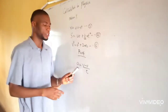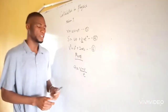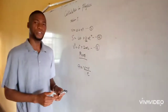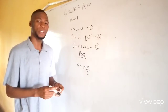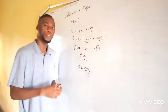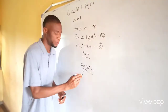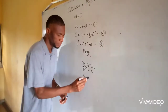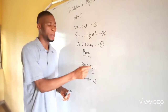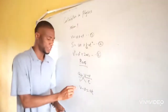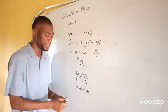So acceleration equals change in velocity, where v is the final velocity and u is the initial velocity, all divided by the time taken. We are going to make v the subject of the formula. We are going to cross multiply, which gives us v minus u equals a times t.